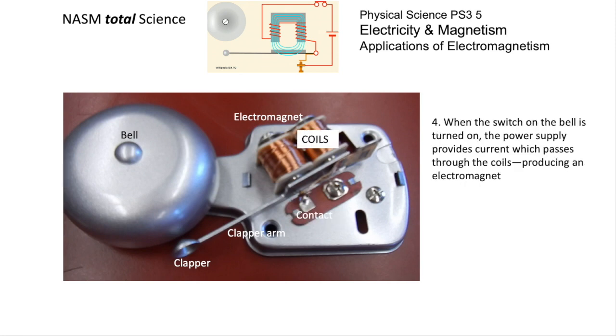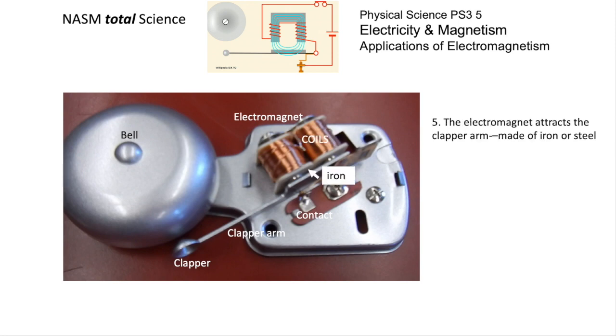When the switch on the bell is connected, the power supply provides current which passes through the coil, producing an electromagnet that in turn will attract the clapper arm. The magnetic field produced by the electromagnet will attract the soft iron or mild steel of the clapper arm, and that will make the clapper arm move upwards and hit the bell.